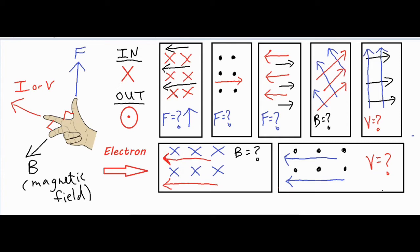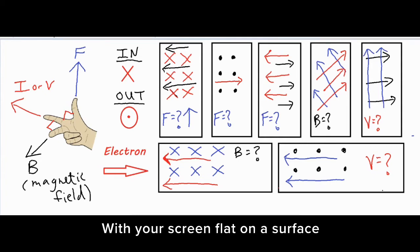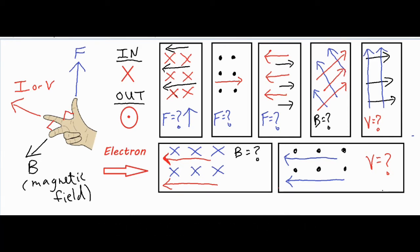For the second example, I put my pencil down and set my hand for the right-hand rule. I point my pointer finger to the right — that's the current or velocity direction. This position is a little harder to manage. Then I point my middle finger straight out of the screen. Turning my hand so the palm faces the ceiling, pointer finger to the right and middle finger facing up, my thumb ends up facing down. So the force is directed downwards.